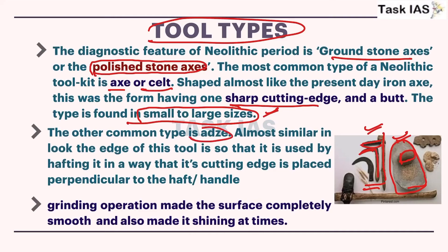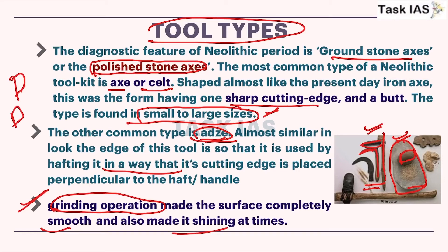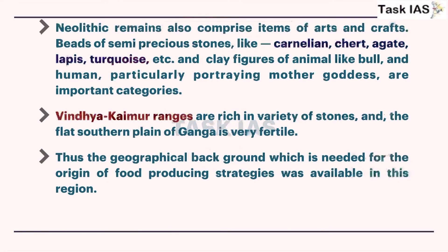The other common type is the adze, also used for cutting trees and harvesting crops. Grinding operations done on tools make them smoother and shinier. Tools made during Paleolithic or Mesolithic may have the same style or shape as in Neolithic, but now they are more polished and smooth - if a tool is smooth with some hafting, human beings can use that tool for longer time and more efficiently. Neolithic remains also comprise items of art and crafts. Semi-precious stones like Carnelian, Chert, Agate, and Lapis were also used, and there are some features of wool and artifacts showing belief in mother goddesses.